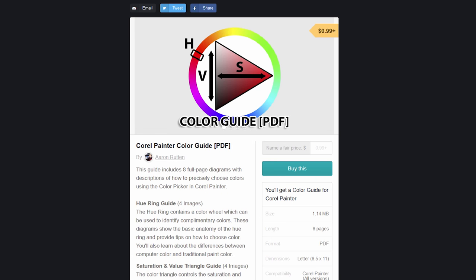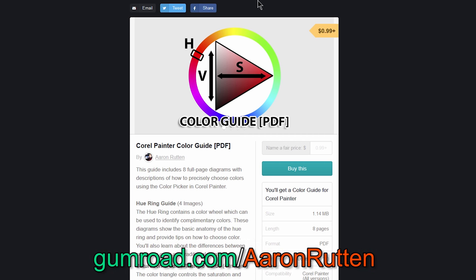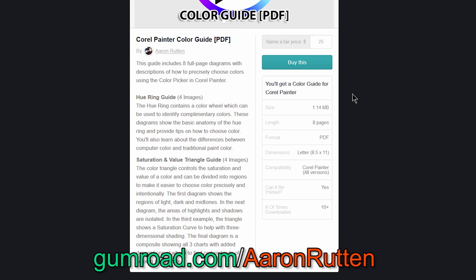So there you go. That's a walkthrough of my Corel Painter Color Guide PDF. Again, if you're interested in downloading this, you can get it from gumroad.com/AaronRutten. And if you scroll down, you'll see some other information that might be helpful.